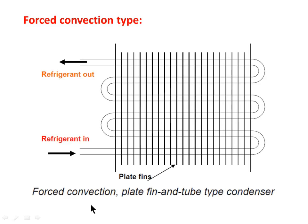Next is the forced convection type of condenser, known as the plate fin and tube type. The plate fins are provided in between the tubes. This is the refrigerant inlet and this is the refrigerant outlet. Refrigerant flows through the tubes, which are embedded in between the plate fins. A fan is provided to enhance the movement of air, which is why it is called a forced convection type condenser.